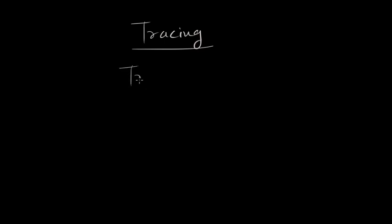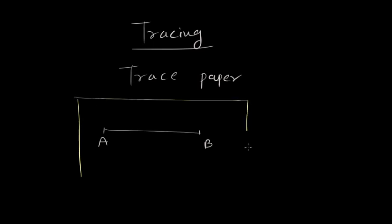So there is something called trace paper. What we usually do is whenever we want to draw something, let's say there is this segment AB given to us, we put a tracing paper over AB. And because this tracing paper is semi-transparent, this AB looks a little blurred. I'm showing it using dotted lines, and then you can draw the required segment over AB.